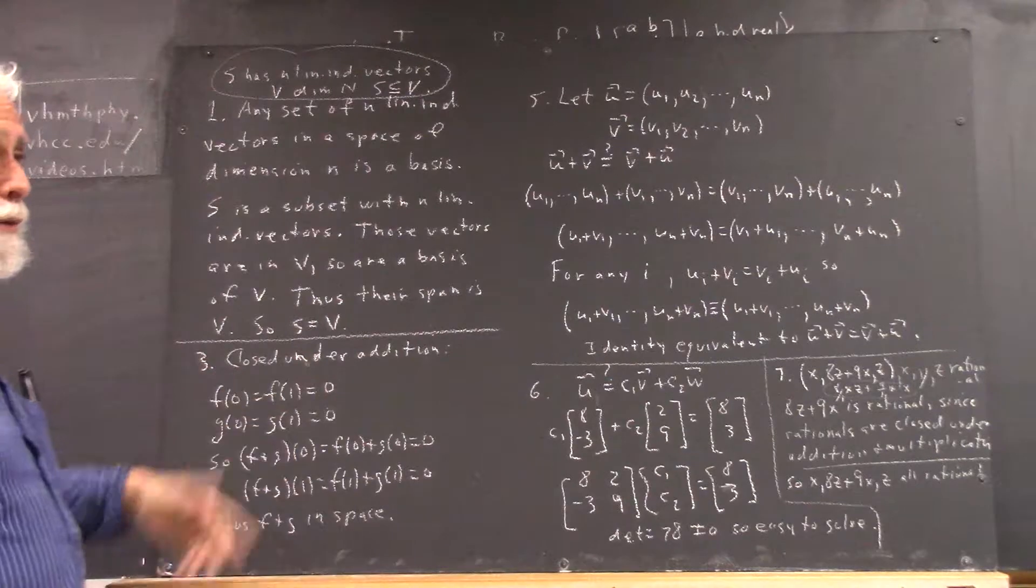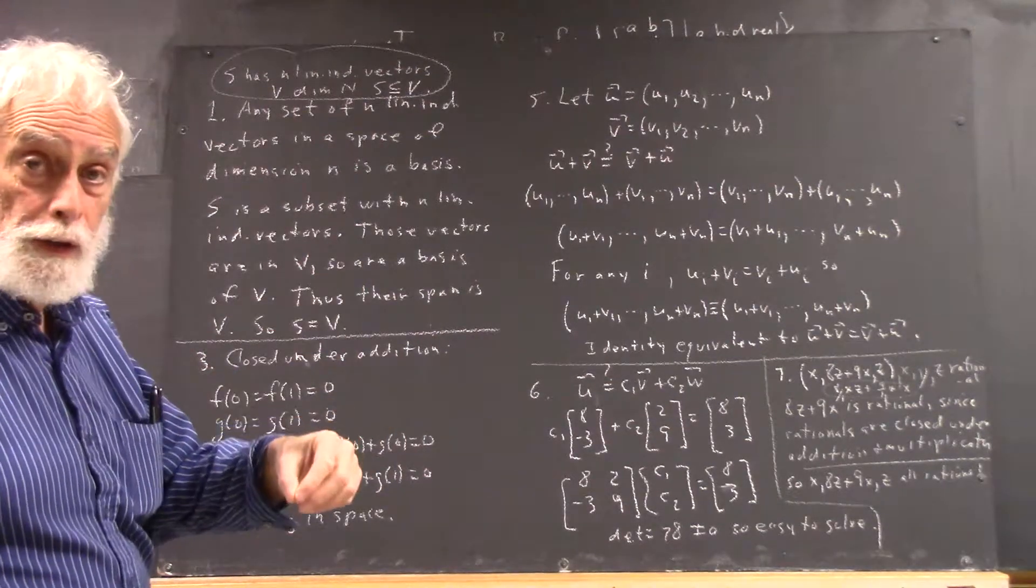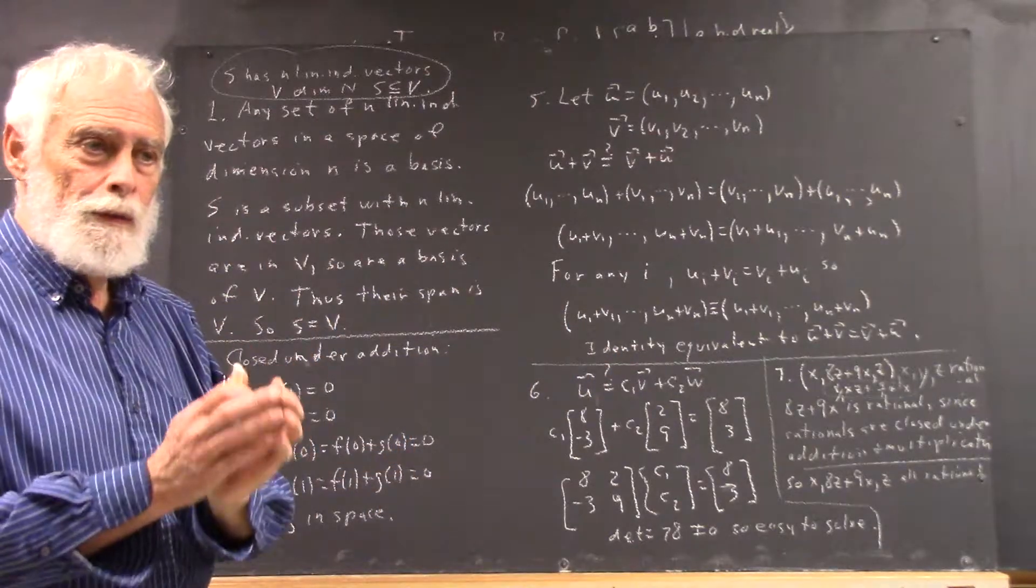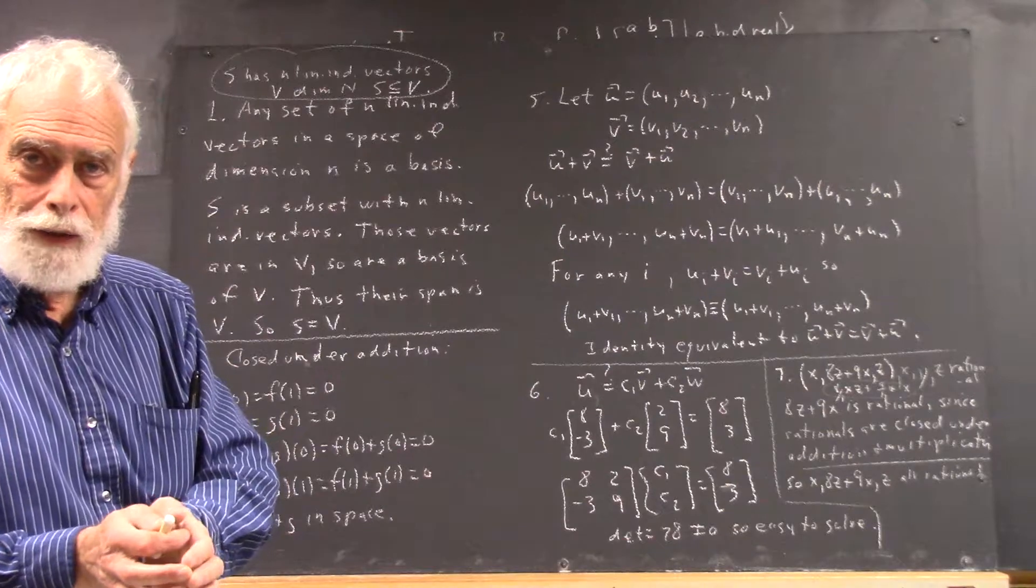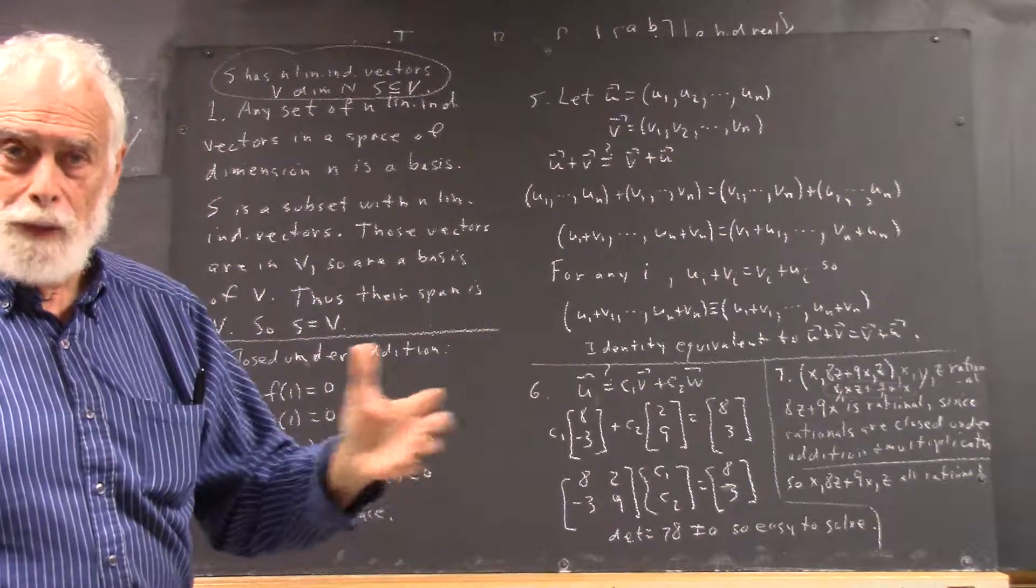So actually I think the way the problem is stated is prove that the sum of two such functions is such a function. To prove the sum of two functions, each of which is 0 when x is 0, each of which is 0 when x equals 1, also has that property.